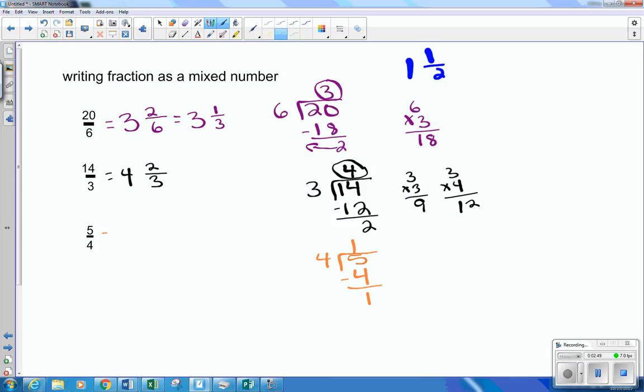So my big number is going to be 1. And my remainder is my new numerator. It's also 1. The denominator is 4. It does not change. There is no number that goes into 1 and 4 other than 1, and it would keep everything the same. That's how you write a fraction as a mixed number.